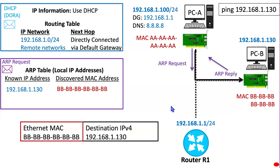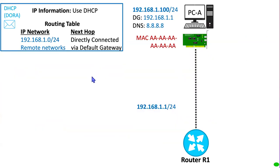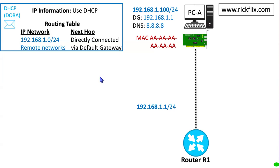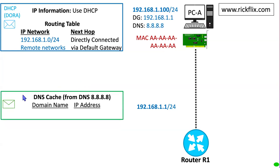Let's take a look at another example. In this example we're going to use a domain name — a URL — www.rickflicks.com. This is how we typically interact with devices. PCA says 'www.rickflicks.com — where is it? What's the IP address associated with www.rickflicks.com?' Where does PCA look for that information? Locally, it looks in its DNS cache — domain name system cache — to see if it has the domain name and the associated IP address. We know the domain name is www.rickflicks.com, but we don't know the IP address. It's not in the DNS cache.